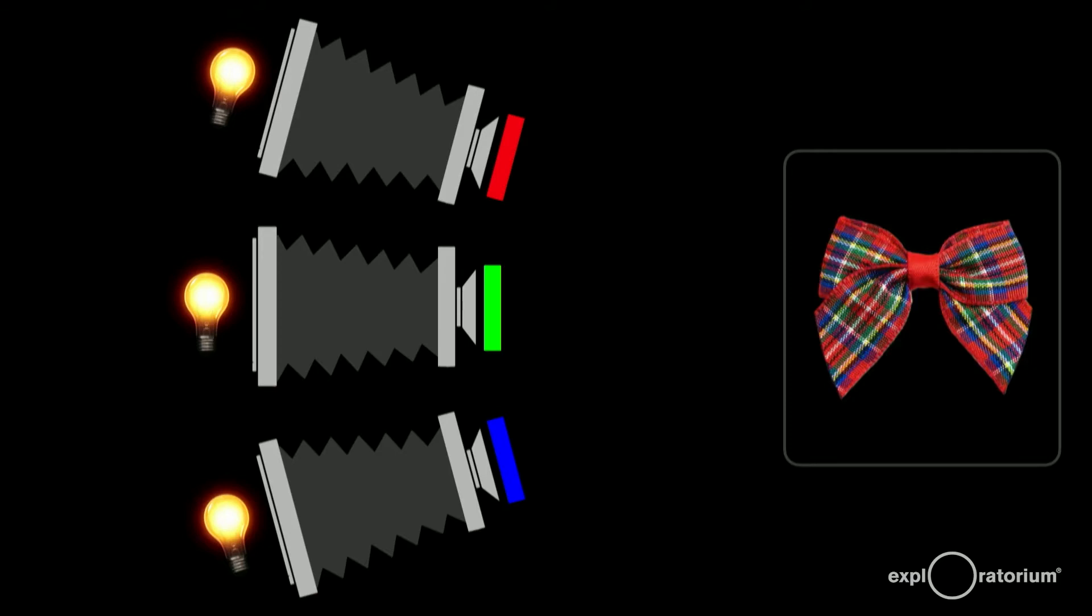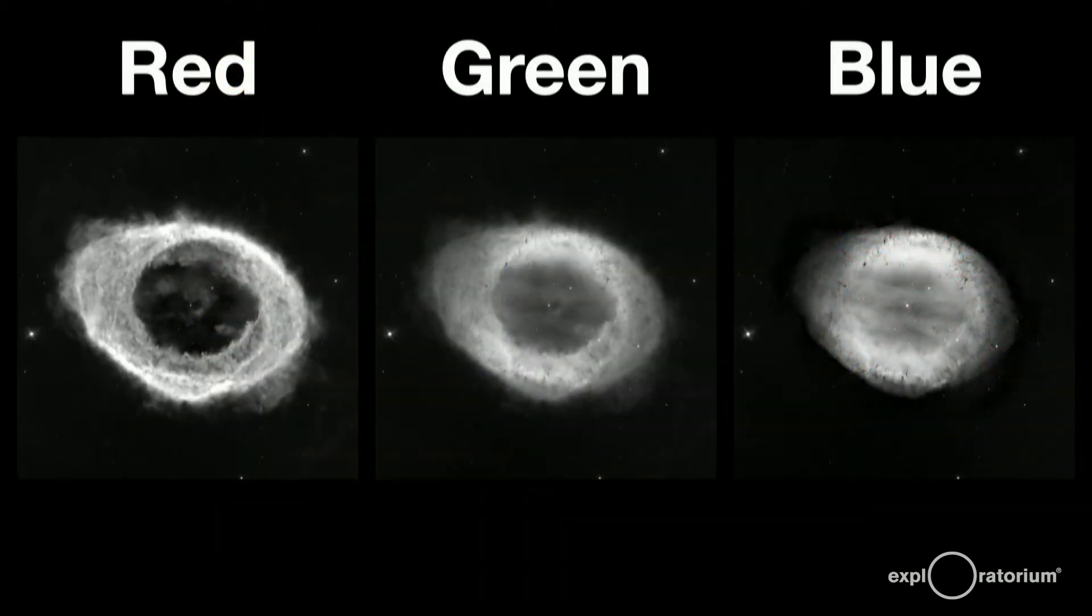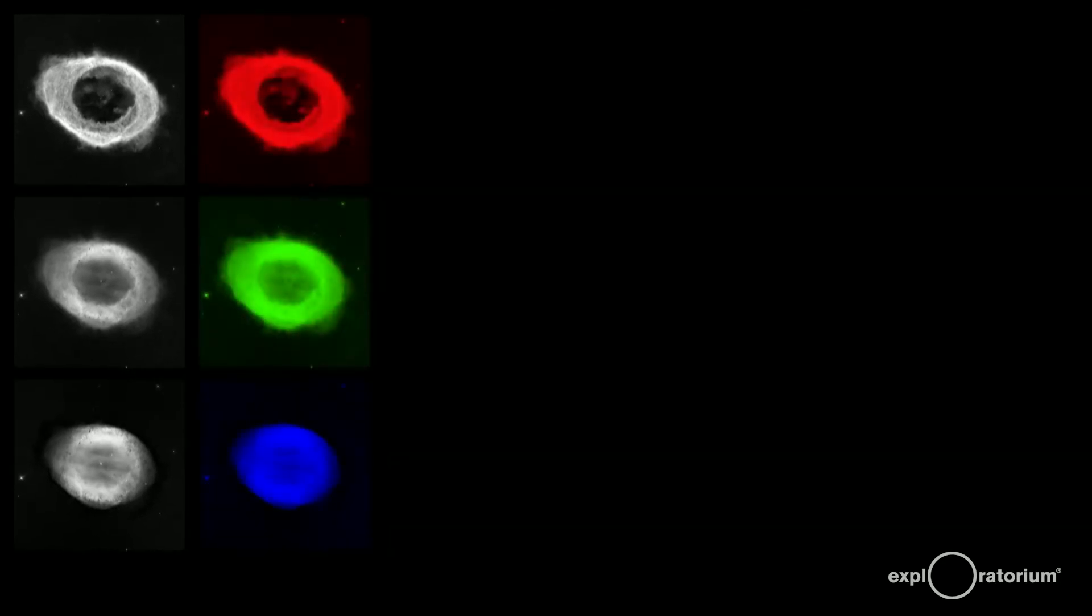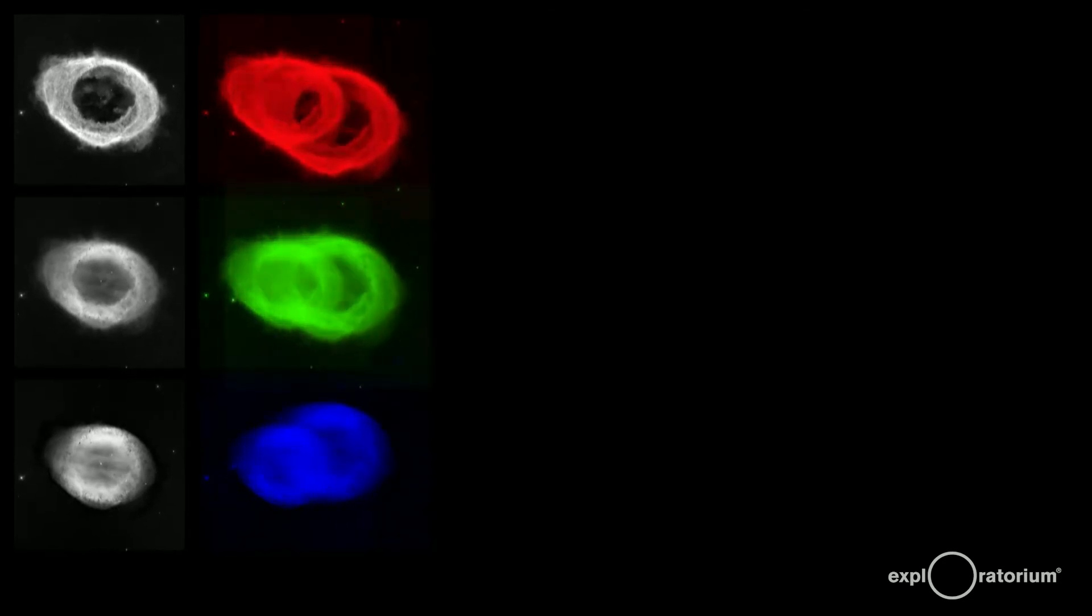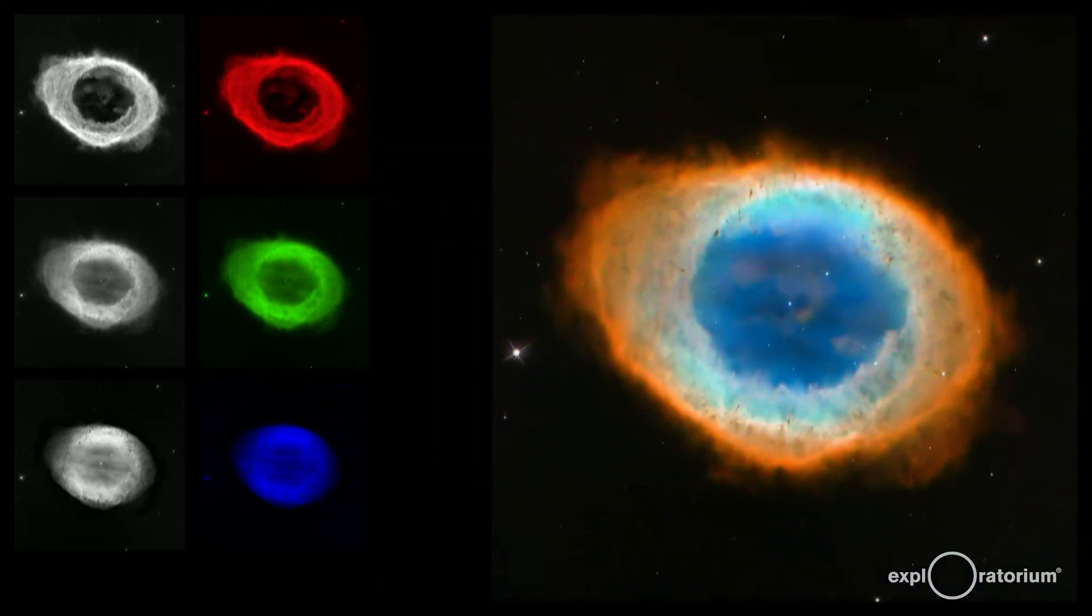Let's look at a modern application of this same method. Most satellite and astronomical images, including Hubble images, are taken the same way, as separate black and white images photographed through different filters.